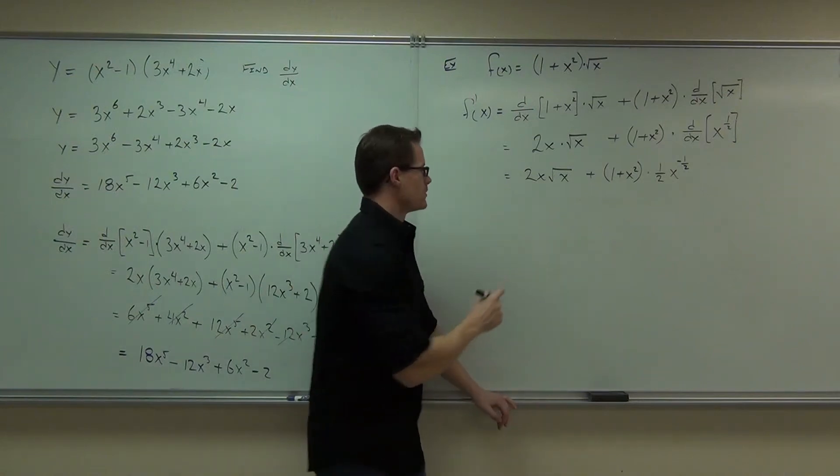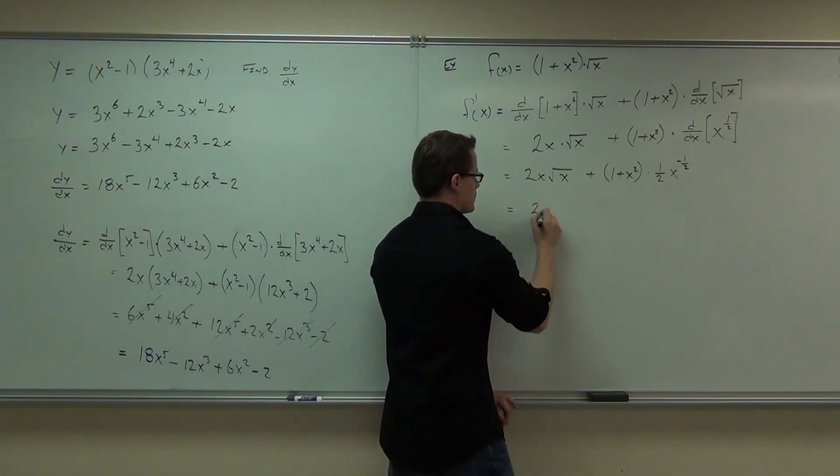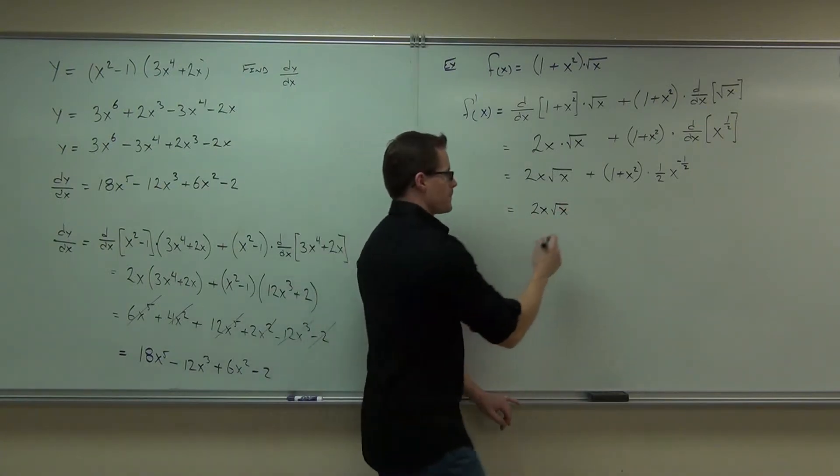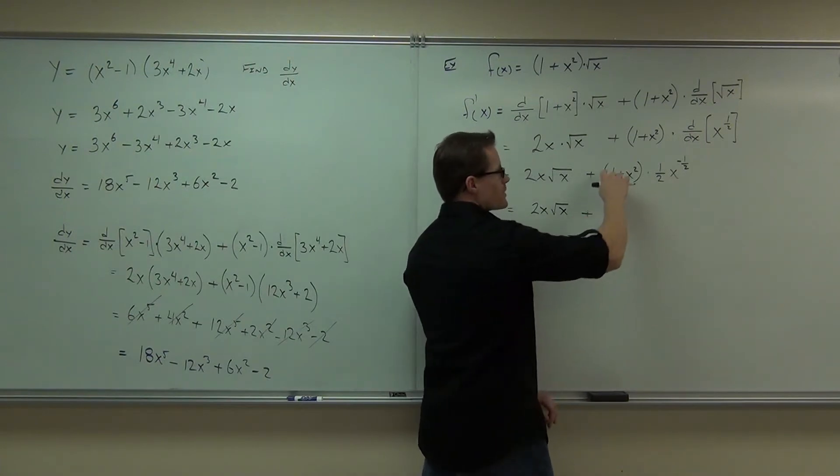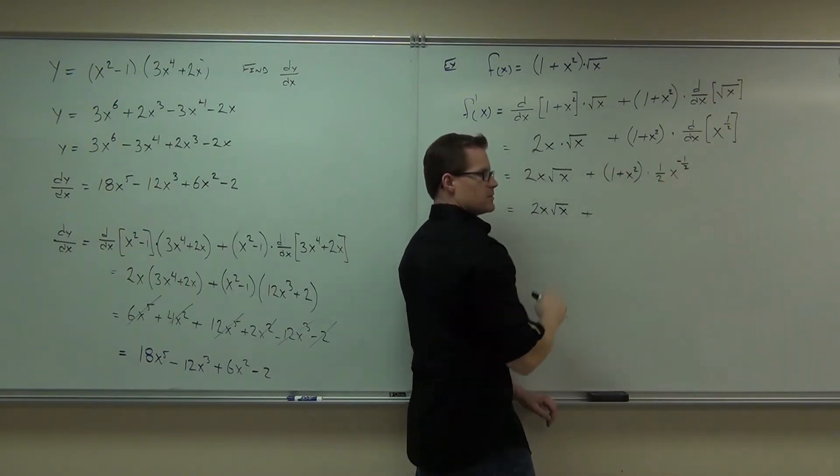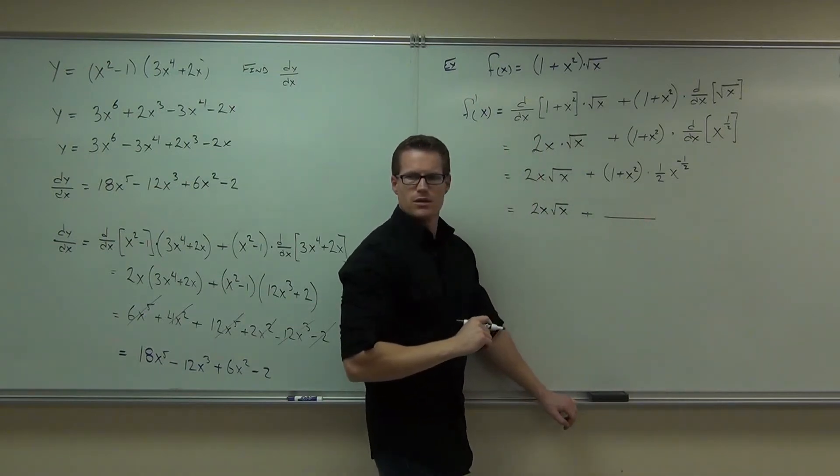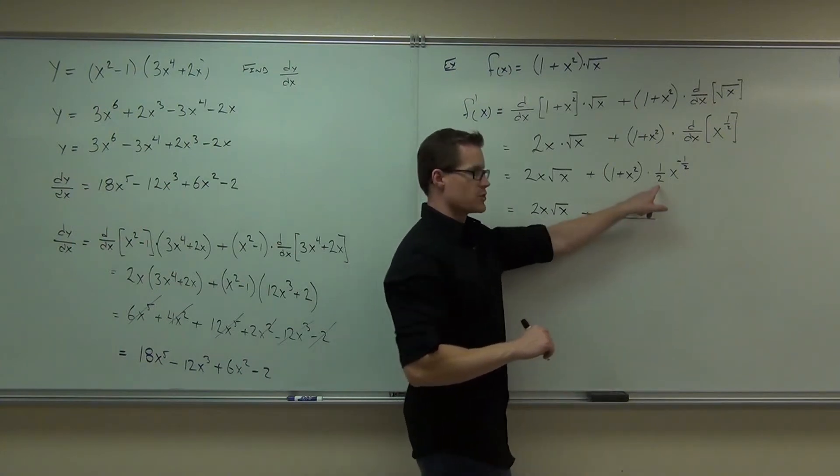It may be just a little bit prettier. 2x root x, you could combine those with fractional exponents if you wanted to. What's on the denominator of this expression? There's a 2, for sure a 2, because of that 1 half. Do you see the 2?